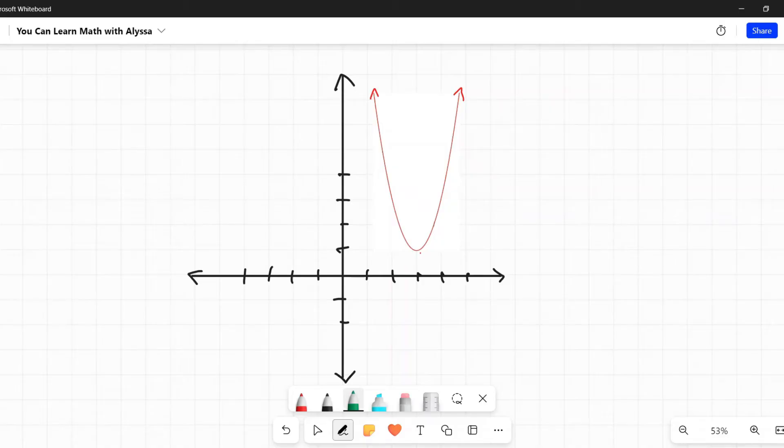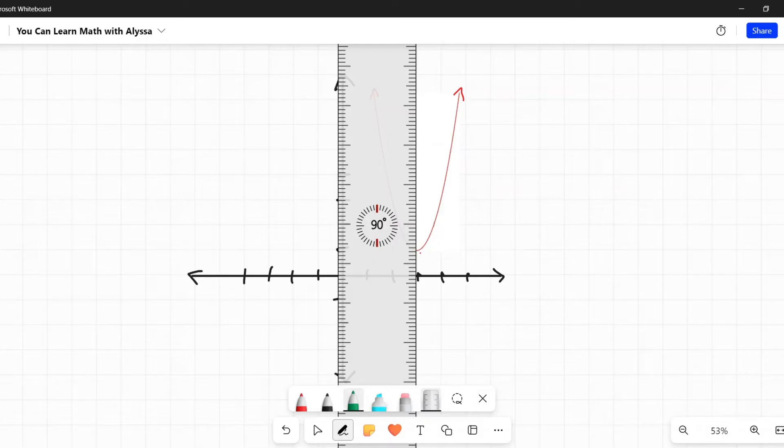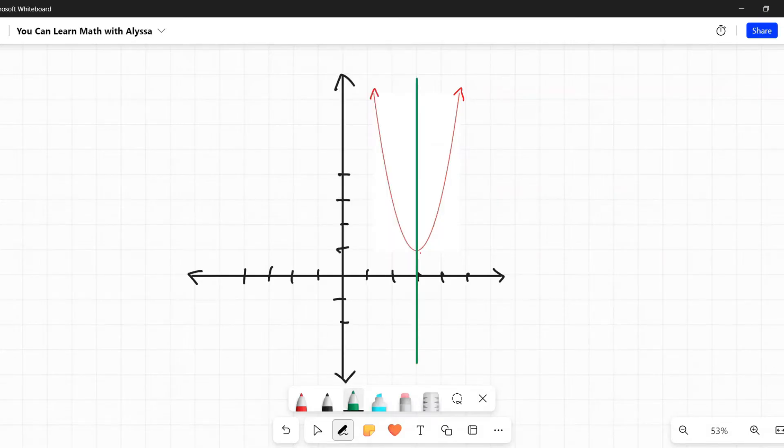The axis of symmetry is a vertical line that goes right through the middle of a parabola and divides it into two symmetrical parts. It intersects the vertex at either the maximum or the minimum. Since it is a vertical line, it will always be in the format of x equals a number, such as in this example where x equals 3.